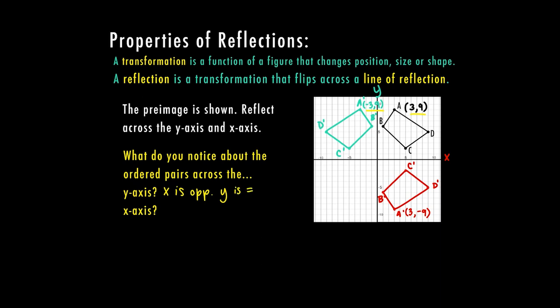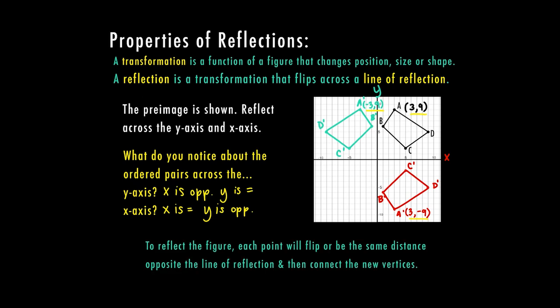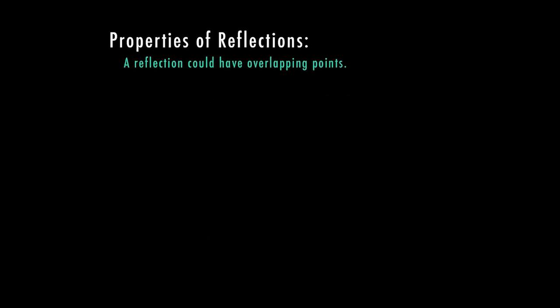Looking at the x-axis reflection in red, point A is at (3, −9). Compared to the original (3, 9), the x is equal and the y is opposite. So it's easy to tell what's changing just by the ordered pairs — but you can also count the distance as we did, placing each point the same distance opposite the line of reflection. First we used the x-axis, then the y-axis.